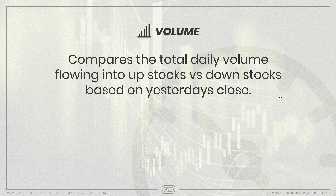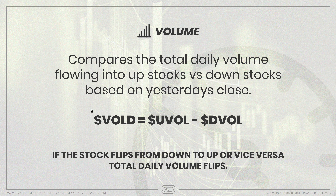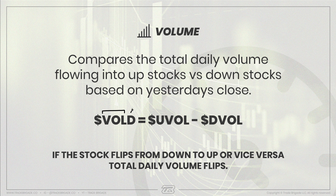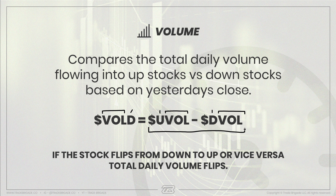We access this within the platform by looking for ticker $VOLD. VOL stands for volume, and D stands for difference. It's a shortening of $UVOL minus $DVOL — up volume minus down volume. You can type the entire string into Thinkorswim as a ticker, but $VOLD will do the same exact thing and save you some headache. It's always measured based on where we're trading compared to yesterday's close, not today's open.